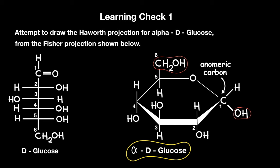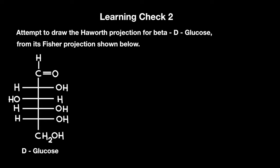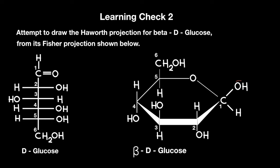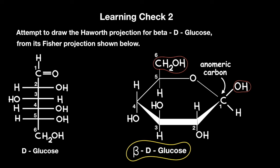Okay let's move on to learning check number two. Attempt to draw the Haworth projection for beta-D-glucose from its Fischer projection shown below. In this example the OH on the anomeric carbon is on the same side of the ring structure relative to the CH2OH, which makes it beta-D-glucose.